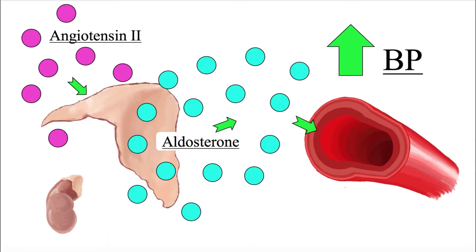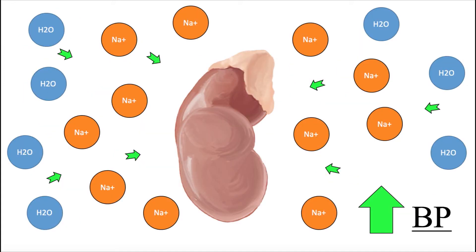Third, angiotensin-2 stimulates the release of aldosterone by the adrenal glands, which enters the bloodstream. Aldosterone increases sodium retention, which leads to water retention, once more increasing extracellular fluid volume and raising blood pressure. Under normal conditions, when sodium levels and extracellular fluid volume reach a certain level, a negative feedback loop is activated, lowering blood pressure.